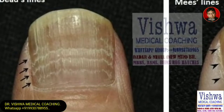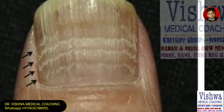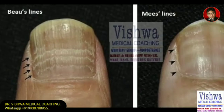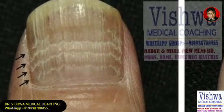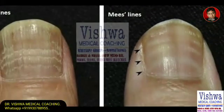Beau's lines are horizontal but are deep furrows going through the nails, as if the nail is not formed properly at those particular lines. This is caused by failure of cell division during that period of nail growth. Beau's lines are most commonly found in cases of coronary artery disease and hypocalcemia, and can also be found in some heart disorders.